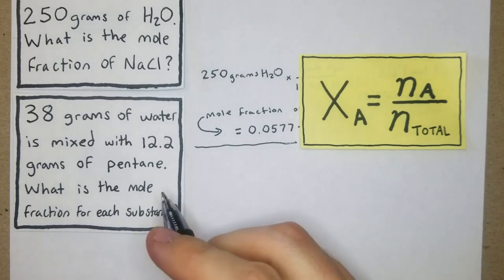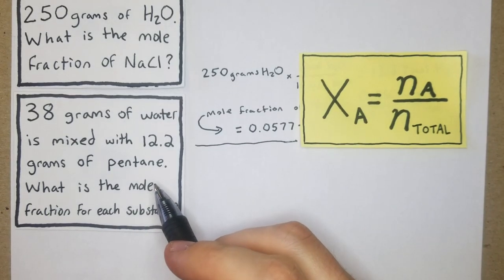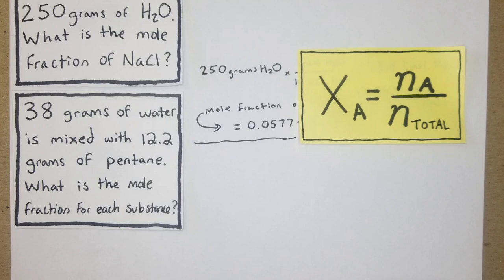Now we're on to this one: 38 grams of water is mixed with 12.2 grams of pentane. What is the mole fraction of each substance? In this case, we're going to be looking for the mole fraction of both of these.